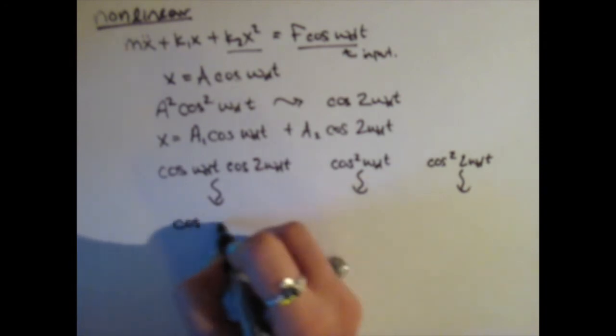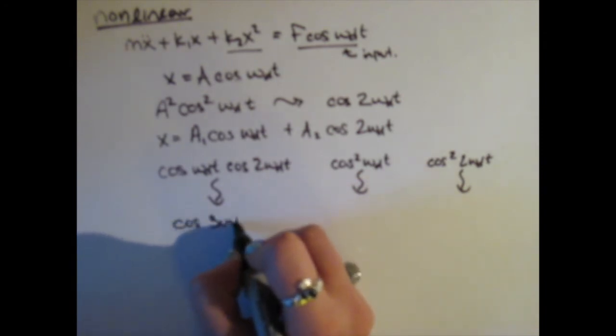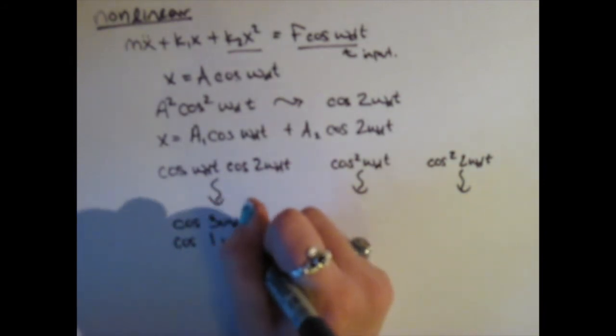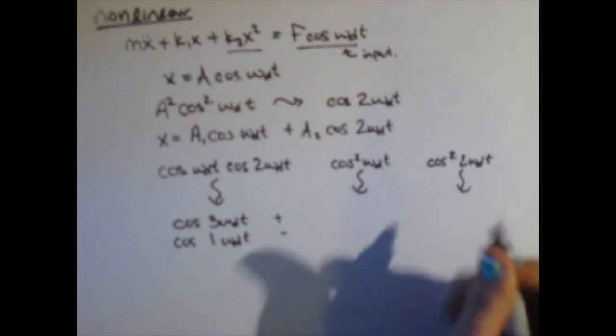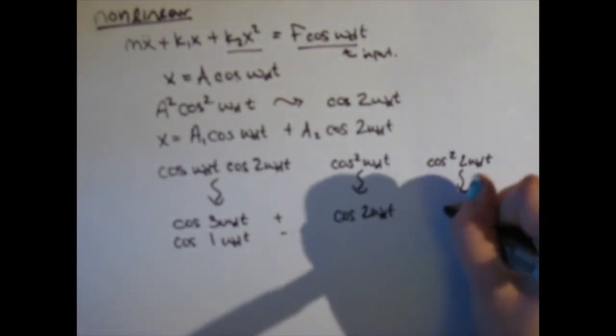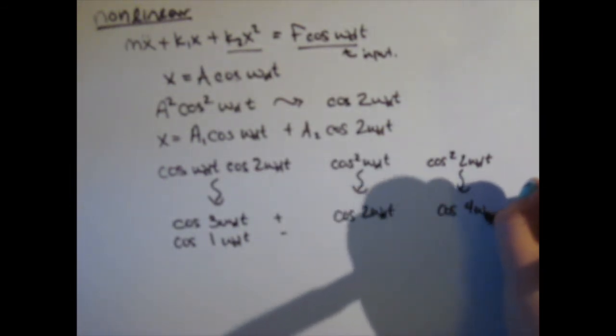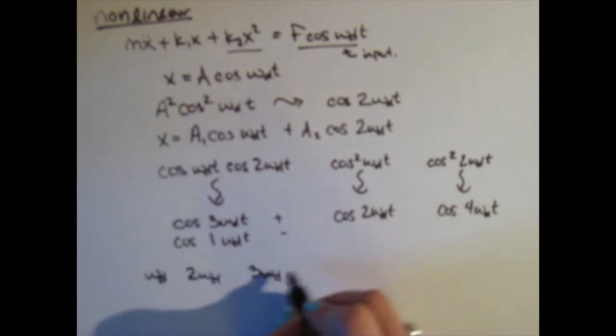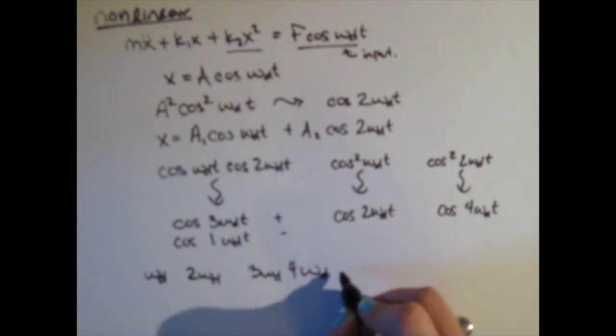We have cosine 3 omega drive T, which is our sum term, and cosine 1 omega drive T, our difference term. We also have cosine 2 omega drive T and cosine 4 omega drive T. So not only do we get the simple omega drive and 2 omega drive that we put in, we also get terms like 3 omega drive and 4 omega drive, and so forth.